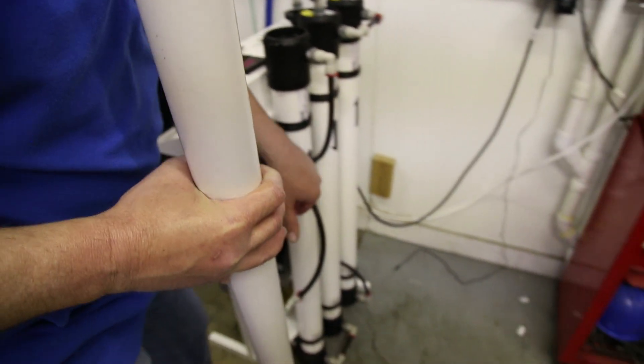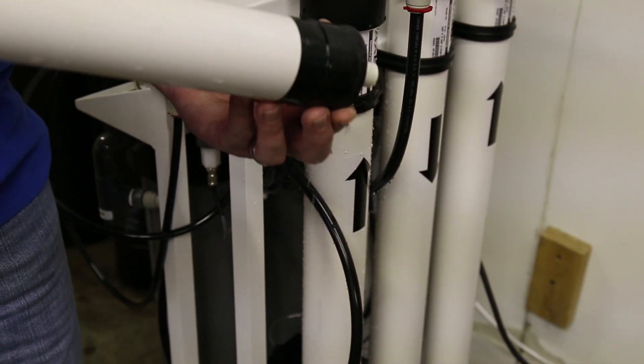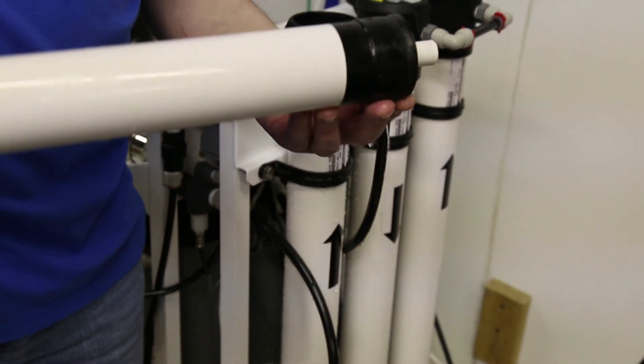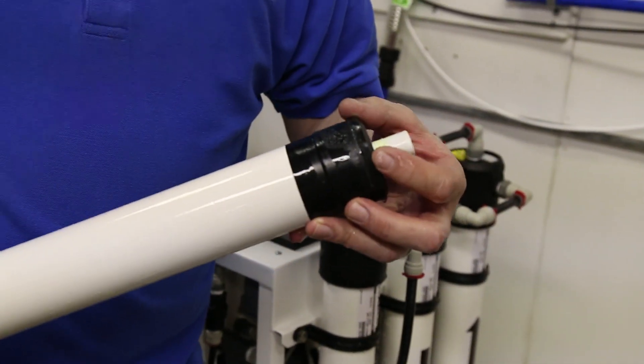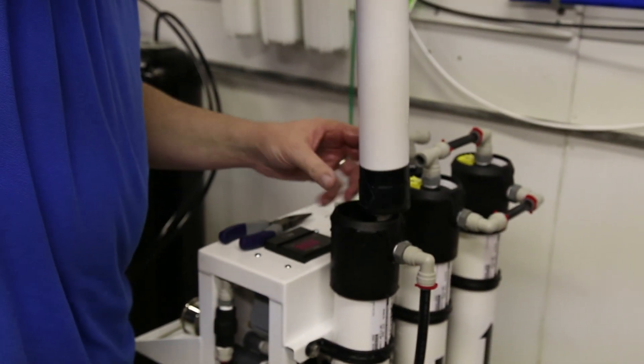Now I want you to see this skirt seal. As you can see it kind of flares out. What happens is when water comes in here, it pushes that seal out and seals this outer band and it forces water to push through the membrane. This is always going to be on the feed side of the membrane housing.